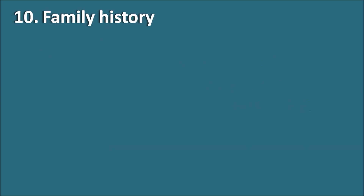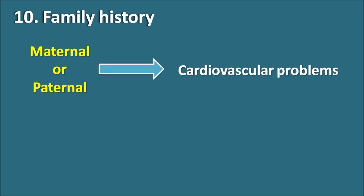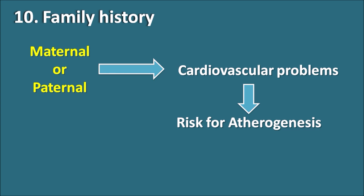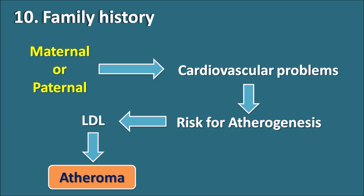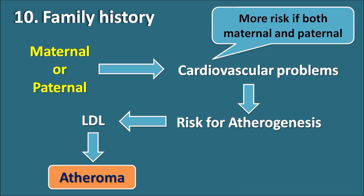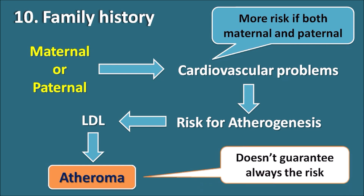The tenth risk factor is family history, which is one of the most important risk factors. If either maternal or paternal side has a history of cardiovascular problems, there is a chance the patient may have a risk of atherogenesis, and elevated LDL levels in such patients may result in atheroma formation. If cardiovascular problems exist on both maternal and paternal sides, there will be even more risk. However, having a family history does not guarantee that atherosclerosis will always develop.